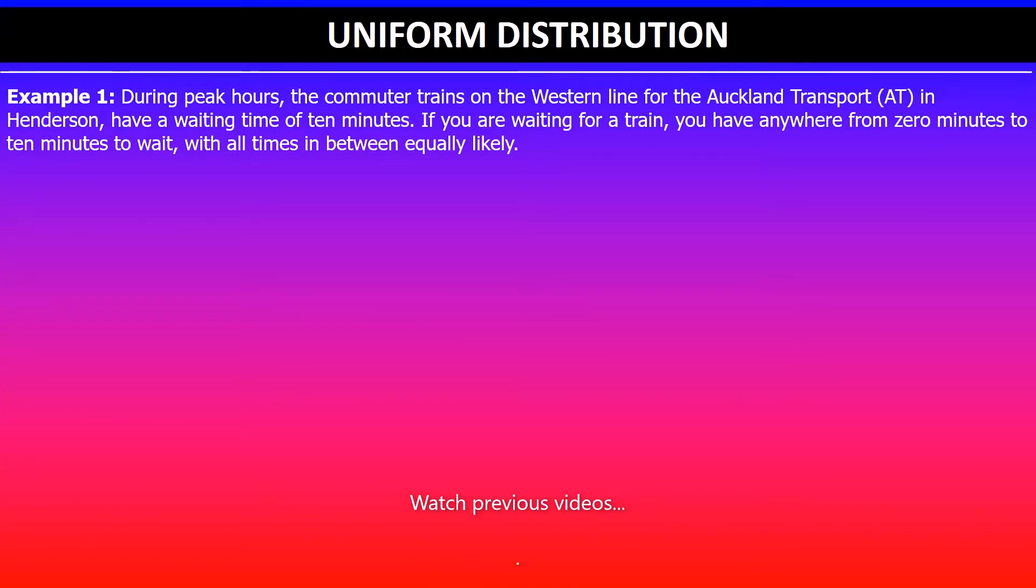In this example, during peak hours the commuter trains on the Western line for the Auckland Transport in Henderson have a waiting time of 10 minutes. If you're waiting for a train, you have anywhere from zero minutes to 10 minutes to wait, with all times in between equally likely. Part one asks us to use an appropriate probability distribution model to sketch the distribution on the axes below.